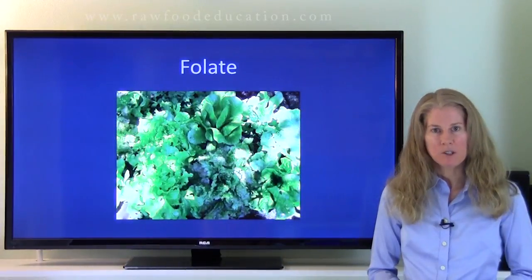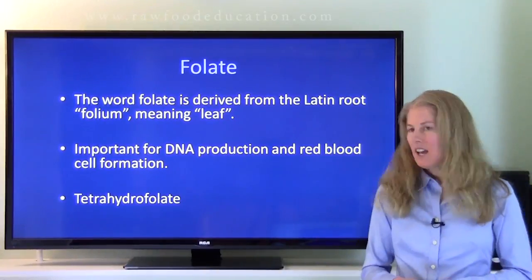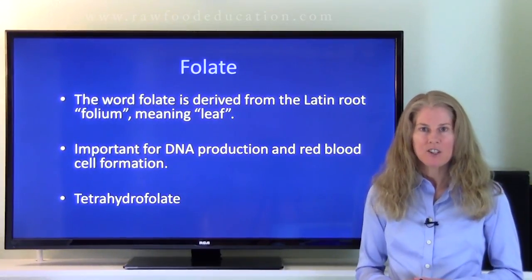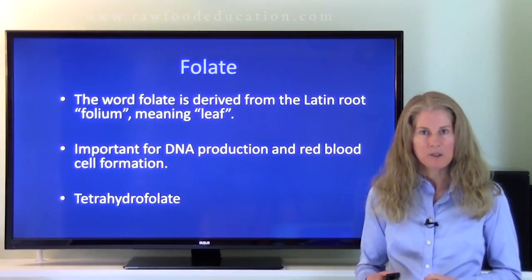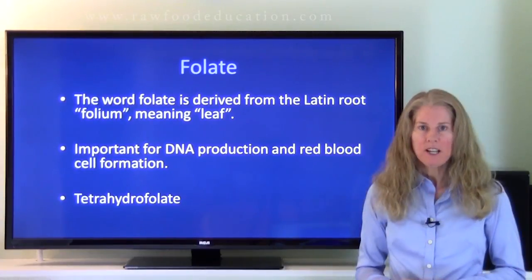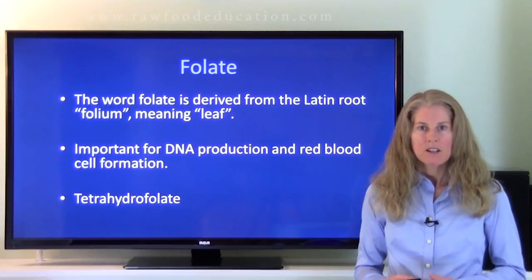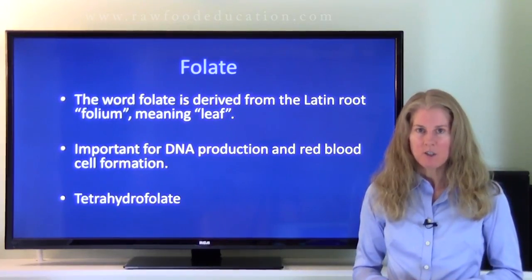The first molecule is folate. Folate has a scientific name of tetrahydrofolate, and it's important for a variety of reactions in the body, especially the production of DNA — also known as our genetic code — and red blood cells. The word folate is derived from the Latin root 'folium,' which means leaf. So folate got its name from foliage, which makes sense because leafy greens are generally a good source of folate.